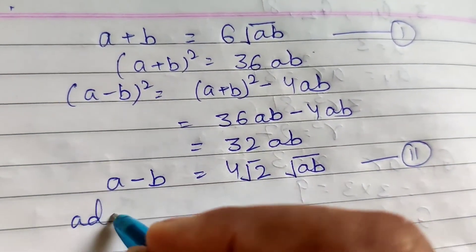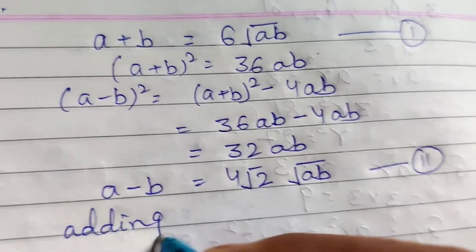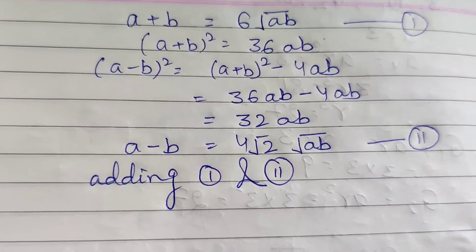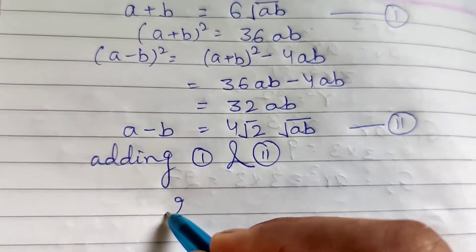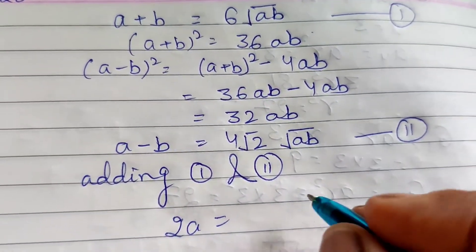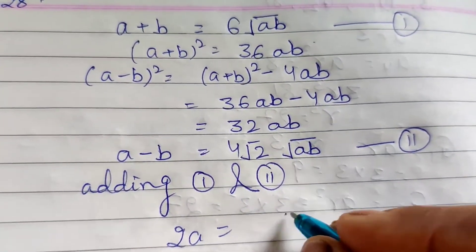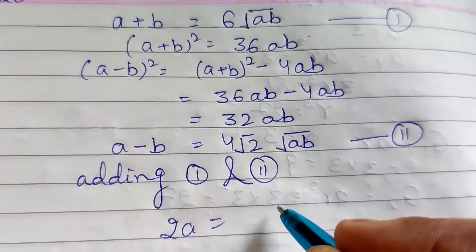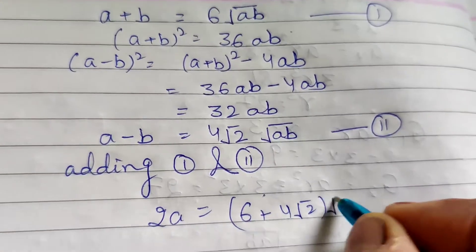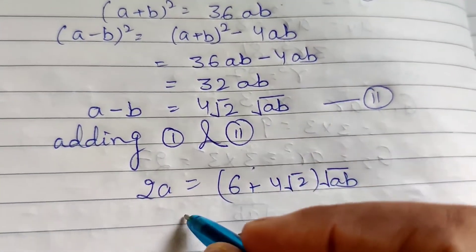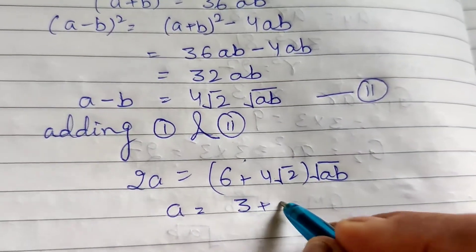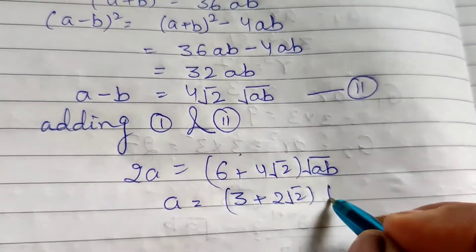Adding equations 1 and 2: 2a equals (6 + 4√2)·√(ab), so a equals (3 + 2√2)·√(ab).